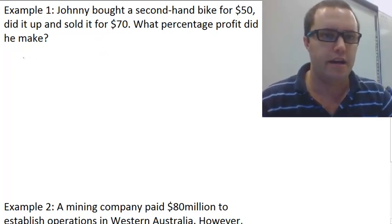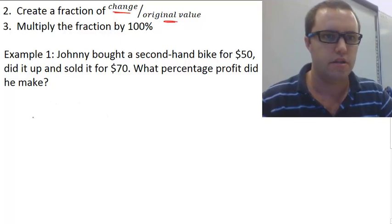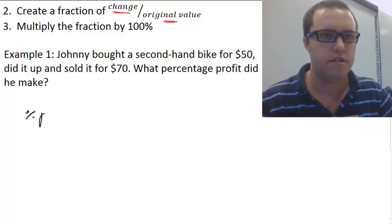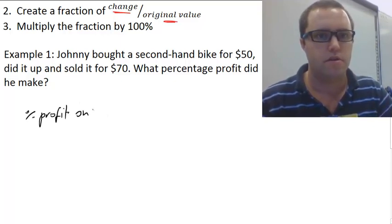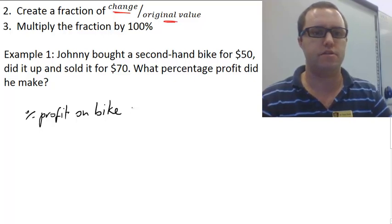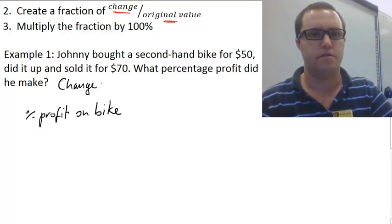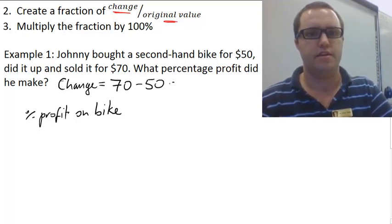So percentage profit on the bike, let's look at the change first. The change is equal to the final, $70, minus the initial value, which is $50, and that gives us $20.